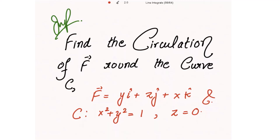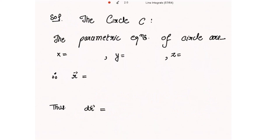Find the circulation of f vector around the curve C, where f vector is given to us and the curve is the circle x² + y² = 1 with the condition that z = 0. This is in the x, y, z plane. The circle given to us is x² + y² = 1 and z = 0.